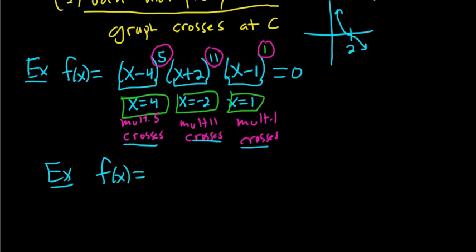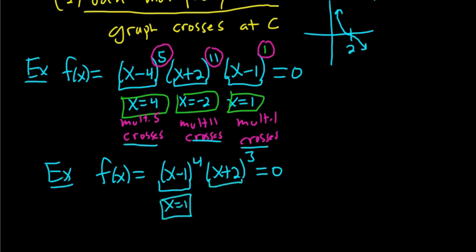So f(x) equals, how about this one? (x-1) to the 4th, (x+2) cubed. So again, if we're looking for the zeros, we start off by setting everything equal to zero. And then what makes this zero? Well, 1 makes it zero. So 1 is one of our zeros. What makes this zero? So negative 2. So negative 2 is another zero.